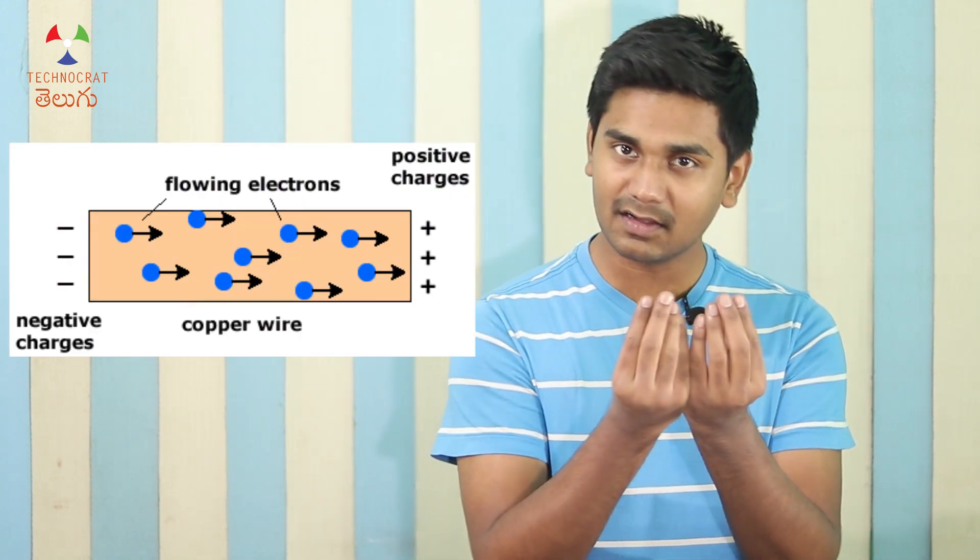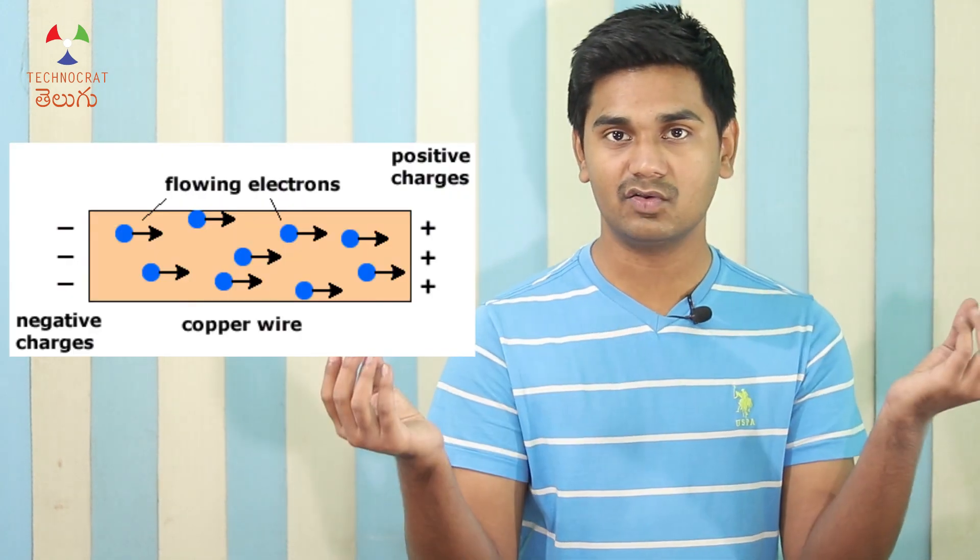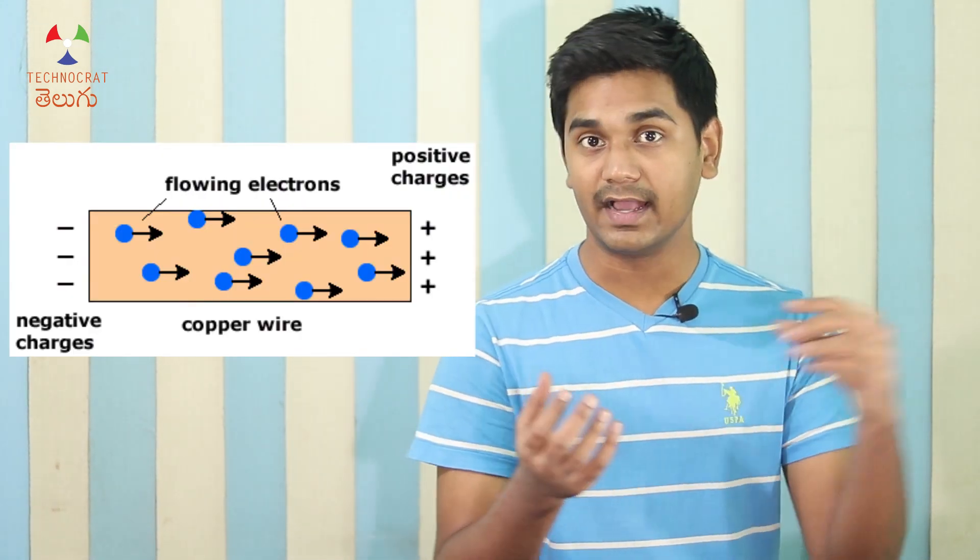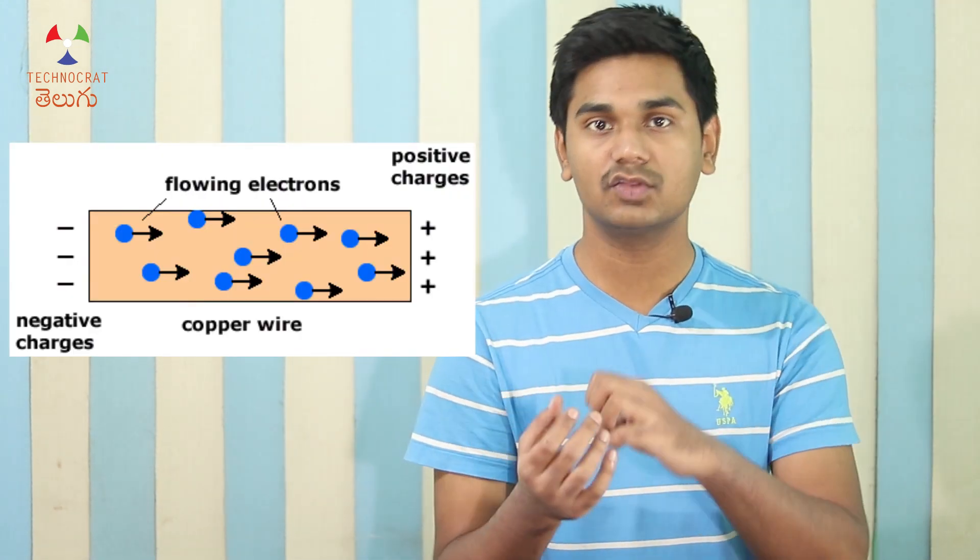We have electronic appliances, electronic gadgets, and electricity. Electricity means that in a copper wire, or in a conductor, electrons flow. These electrons are negative. When we talk about electrons, we measure them in coulombs.